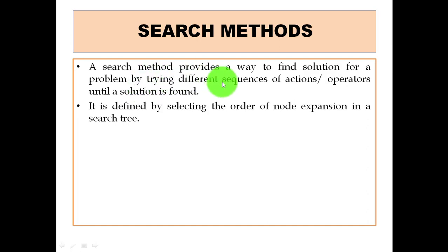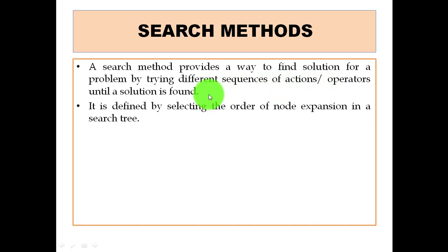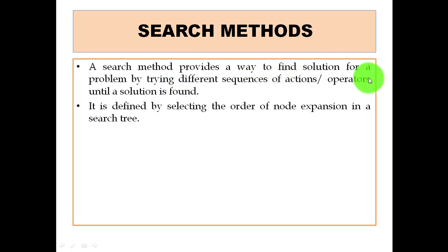A search method finds a solution by trying different sequences of actions or operators until a solution is found. It will continuously try different sequences — either actions or different operators — until the goal is achieved.